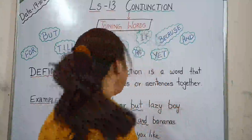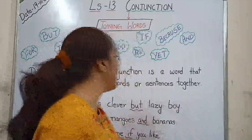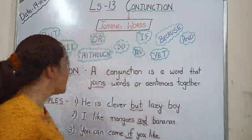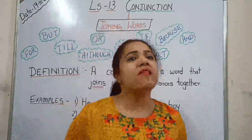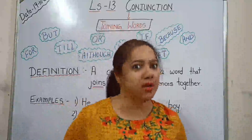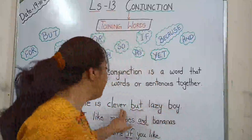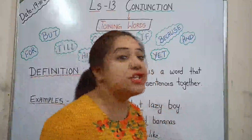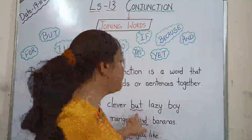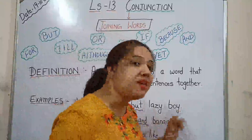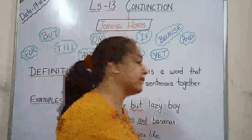Here 'but' denotes the contradiction between the two sentences — one is saying the positive thing and another word is saying the negative one. If it's written 'he is a clever boy, he is a lazy boy,' why do we have to write it as a long one? We use a conjunction in between. For contradiction we will use 'but' as a conjunction. He is clever but lazy boy. So here 'but' is used as a conjunction.